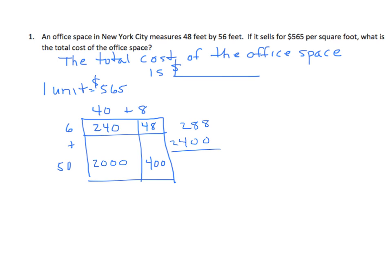We'll now find the sum of these two. We have 0 ones, 0 tens, 4 hundreds, and 2 thousands. We'll add our partial products to get our area: 8 in the ones, 8 in the tens, 6 in the hundreds, and 2 in the thousands — so 2,688. That's how many units we have. I know each unit is $565, and I'm going to use the standard algorithm to solve this. I'll put 2,688 on top, because if I use it on the bottom I'll have 4 partial products, and I'd rather work with 3.